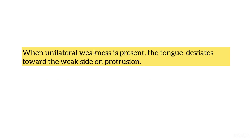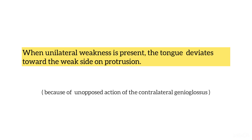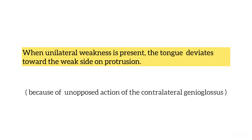When unilateral weakness is present, the tongue deviates towards the weak side on protrusion. This occurs because of the unopposed action of the contralateral genioglossus.